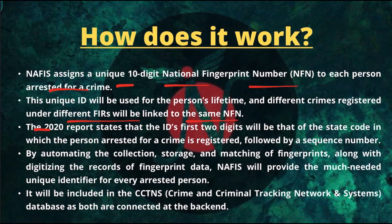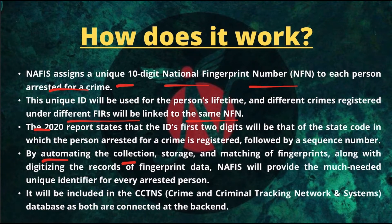The 2020 report states that the ID's first two digits will be that of the state code in which the person was arrested or the crime is registered, followed by a sequence number. By automating the collection, storage, and matching of fingerprints, along with digitizing the records of fingerprint data currently available with the Crime Records Bureau, NAFIS will provide the much-needed unique identifier for every arrested person.